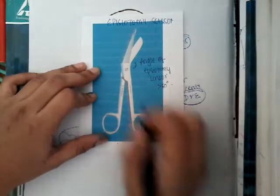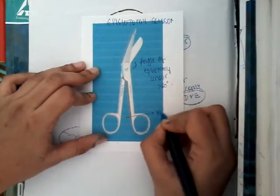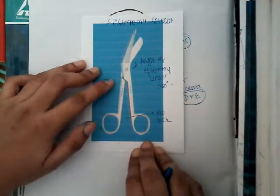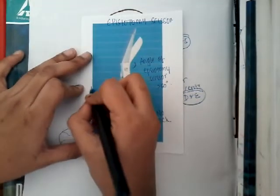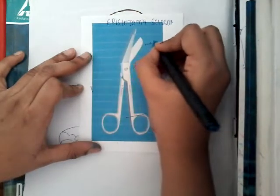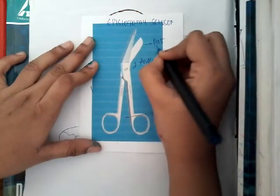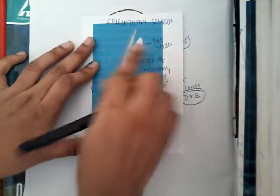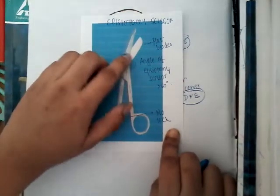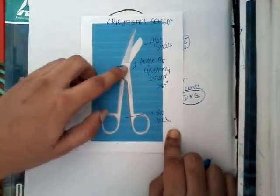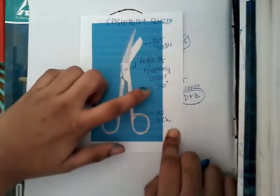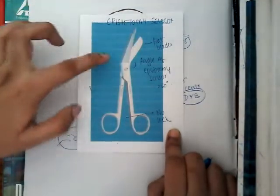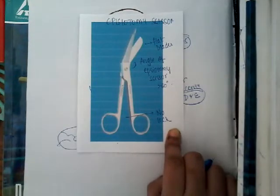There is an angle in the scissors and there is no lock. If you see the scissors, it is a little flattened — the blades are horizontally flat. The angle of episiotomy is more than 60 degrees and there will be no lock. These are the main features by which you can identify the episiotomy scissors.